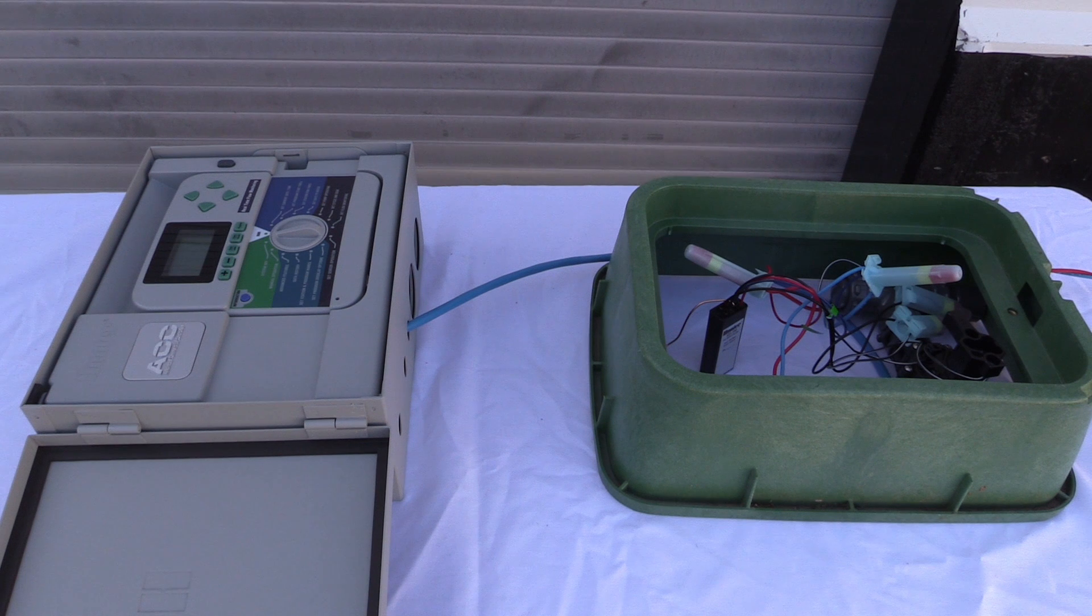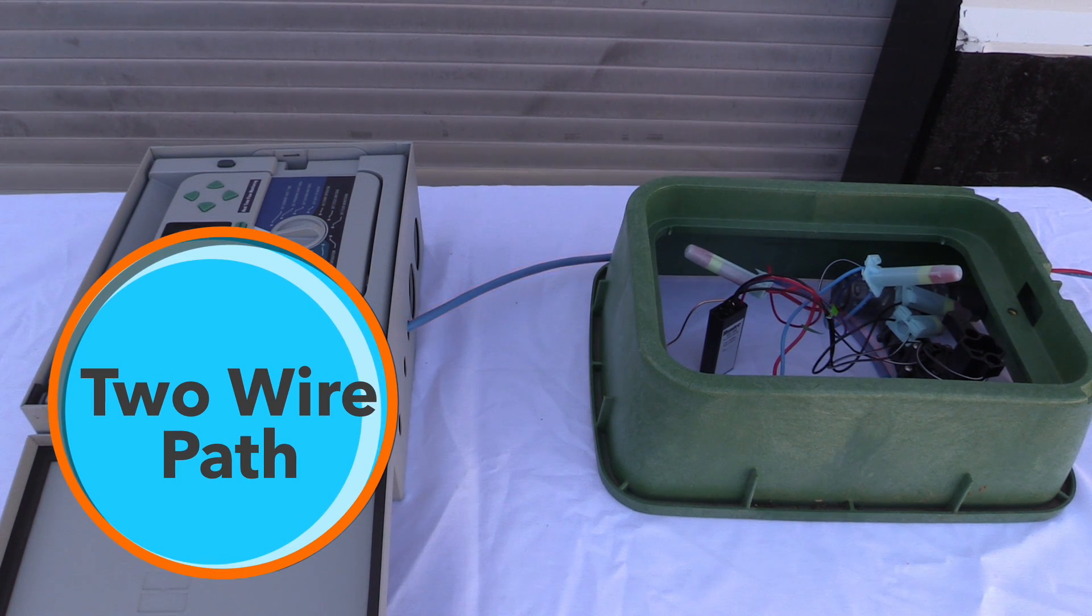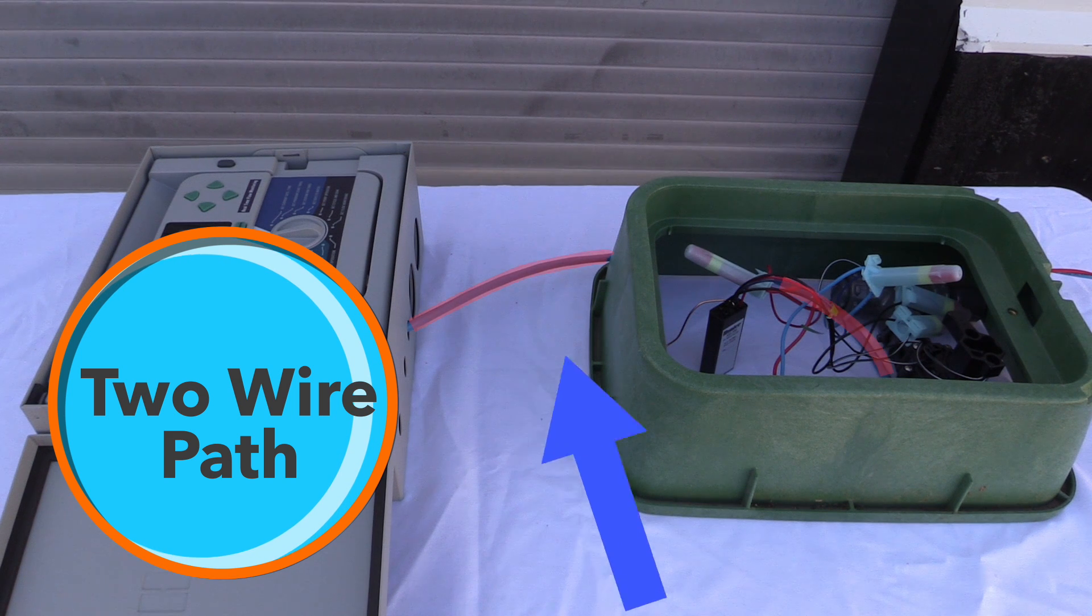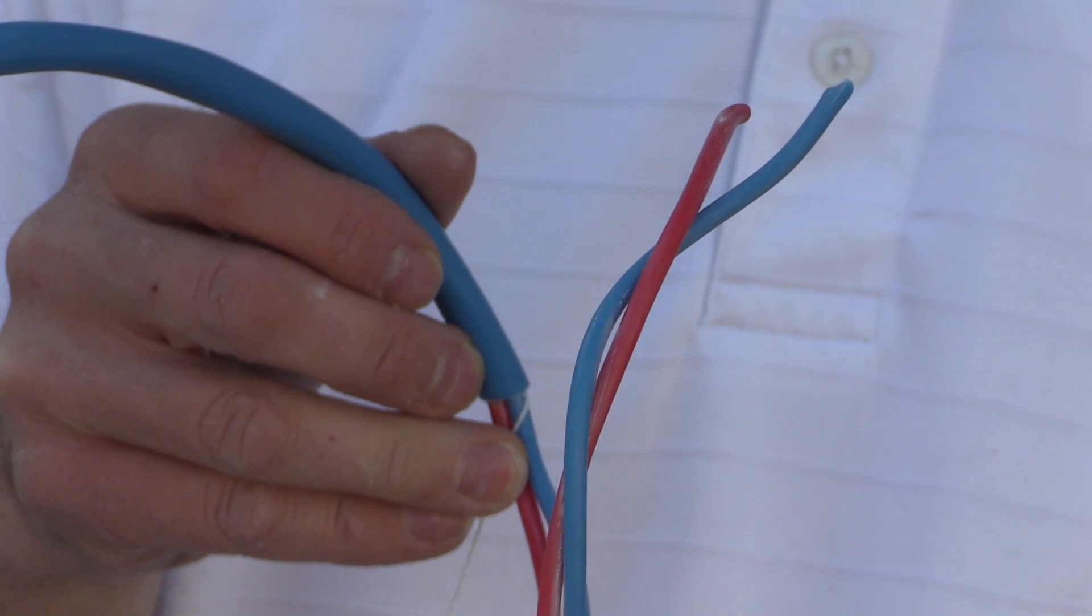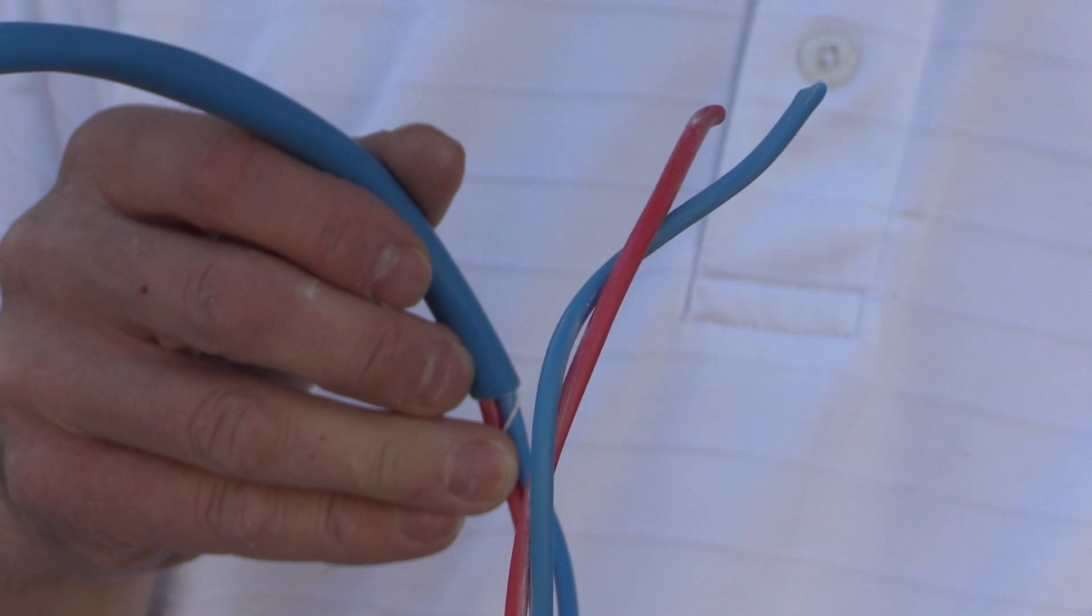First, the operation of the entire decoder system relies on the integrity of the two-wire path. This two-wire path is used to activate every valve in the system. In a conventional system, each valve has its own wire.